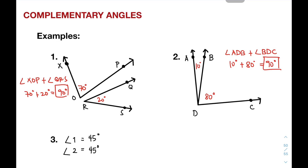For item number three, we don't have an illustration for the angles, but we have the measurements. When you add the measurement of angle 1 plus the measurement of angle 2, it gives you 45 degrees plus 45 degrees, which is equivalent to 90 degrees. So definitely, angle 1 and angle 2 are complementary angles.